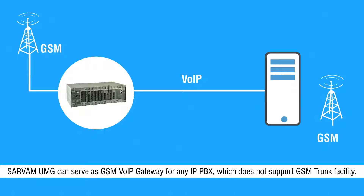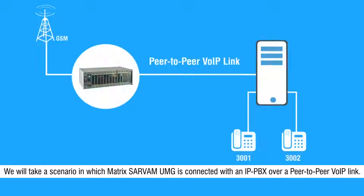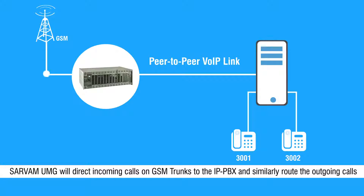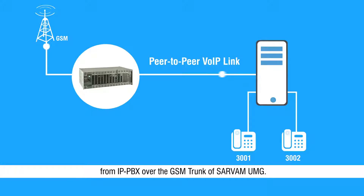Servum UMG can serve as GSM VoIP Gateway for any IP PBX which does not support GSM trunk facility. We will take a scenario in which Metrix Servum UMG is connected with an IP PBX over a peer-to-peer VoIP link. Servum UMG will direct incoming calls on GSM trunks to the IP PBX and similarly route the outgoing calls from IP PBX over the GSM trunk of Servum UMG.